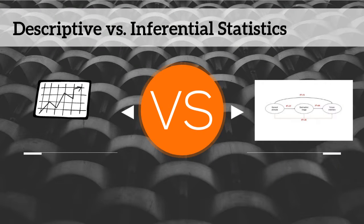Basic descriptive statistics such as frequencies and means are great for explaining complex piles of data and providing solid background information to make the case that a problem actually exists, particularly differentiating the overall population from subpopulations that may be particularly affected by the problem.